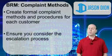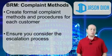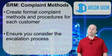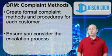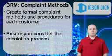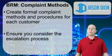Next we have complaint methods — what happens when a customer has a problem? We create formal complaint methods and procedures for each customer. We also need to ensure we consider an escalation process. Not only will the customer come to their point of contact — their business representative inside our organization — but what happens if that person isn't helping them the way they want? They're going to want to go to that person's boss, and we need to know what those processes are. That's all part of business relationship management.